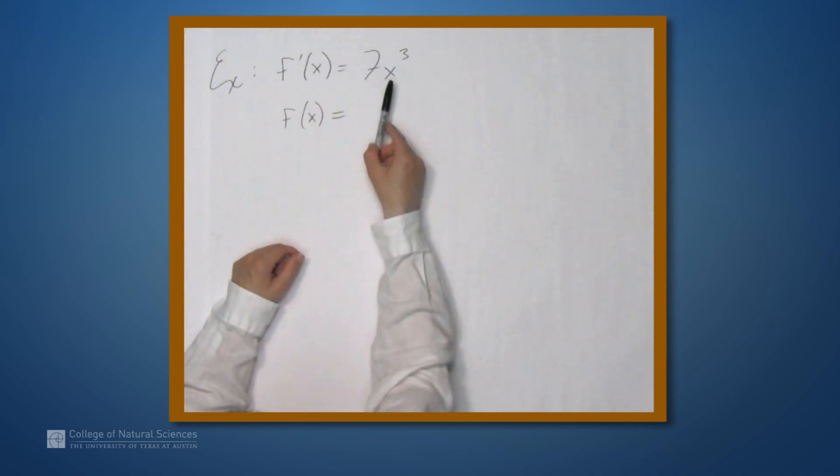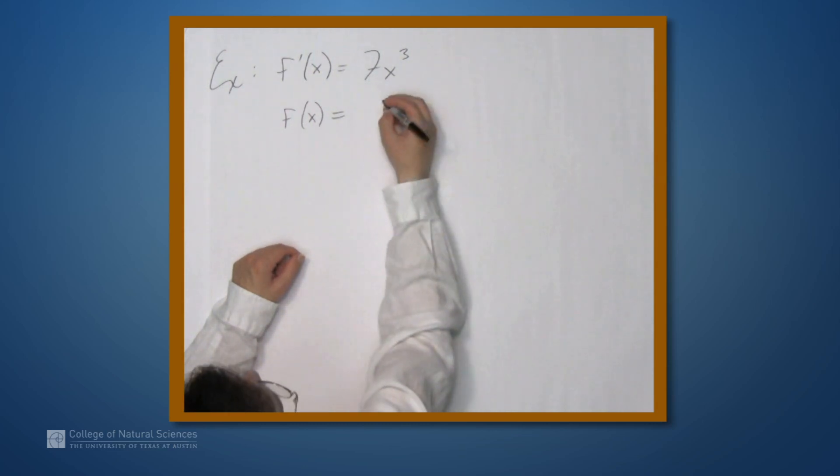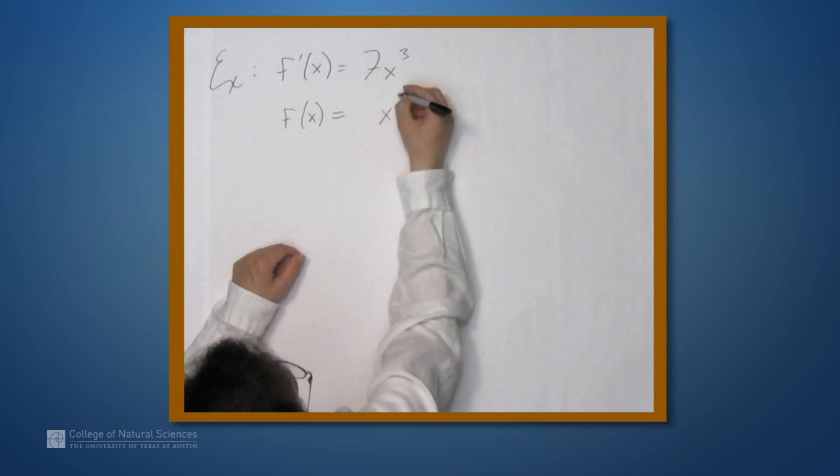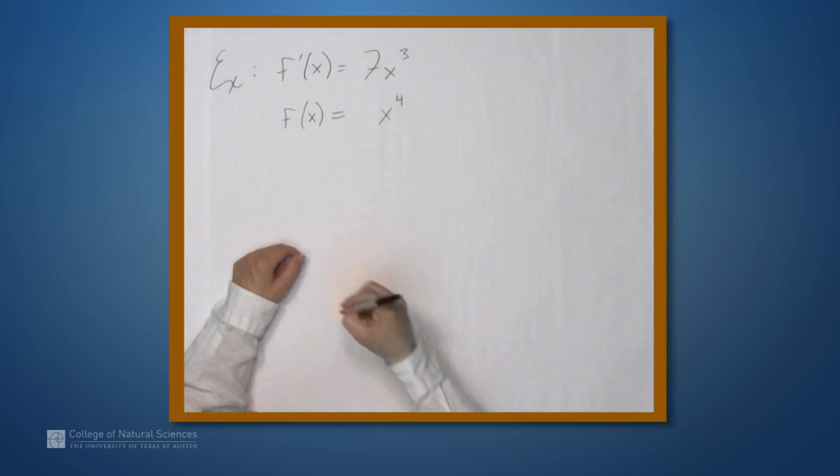So we know we want a function whose derivative involves an x³. That kind of thing is going to come from a function with x to the fourth. Because when we take the derivative of this, the 4 will come down and we're going to get an x³ term. So all we need to figure out is what coefficient to put in front of x⁴, such that when we take the derivative of this thing, we end up with a 7.